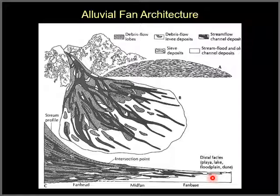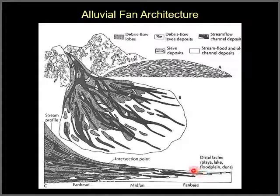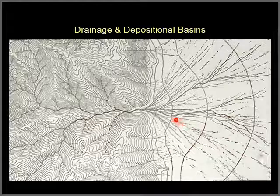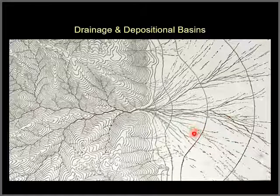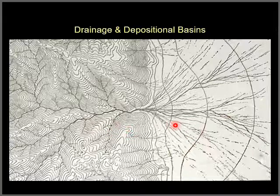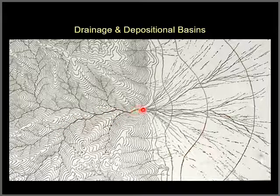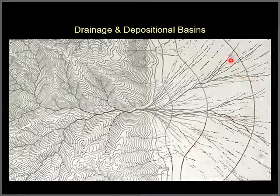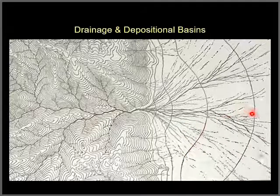Here we have mid-fan and fan base, and you can see the transition of the different facies of deposits from the base of the mountain and farther away. The deposits in the fan base can be interbedded or intercalated with lake deposits, floodplain deposits, and even dunes. This diagram shows a topography of a typical alluvial fan system, with a contrast from the rugged topography at the source to more gentle topography at the base, with increasing slope as you go up to the fan head.